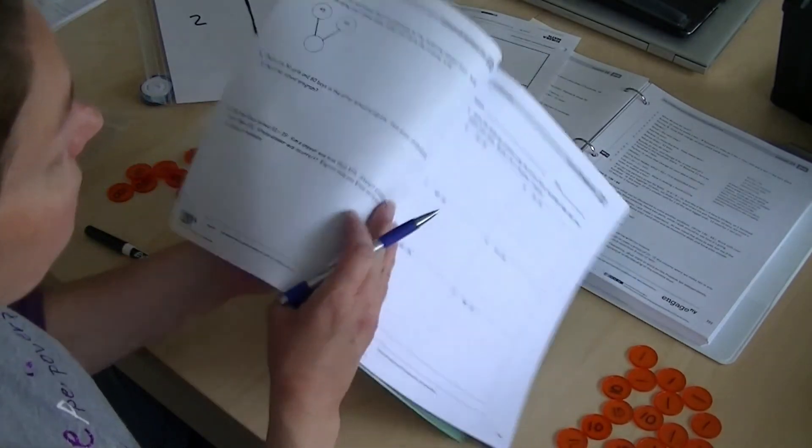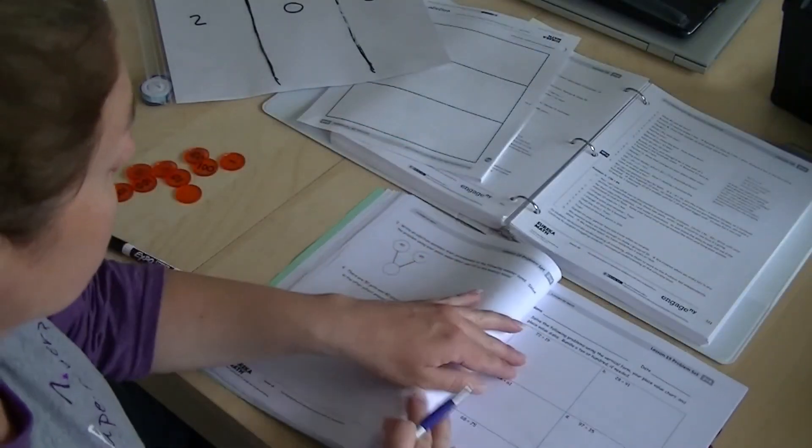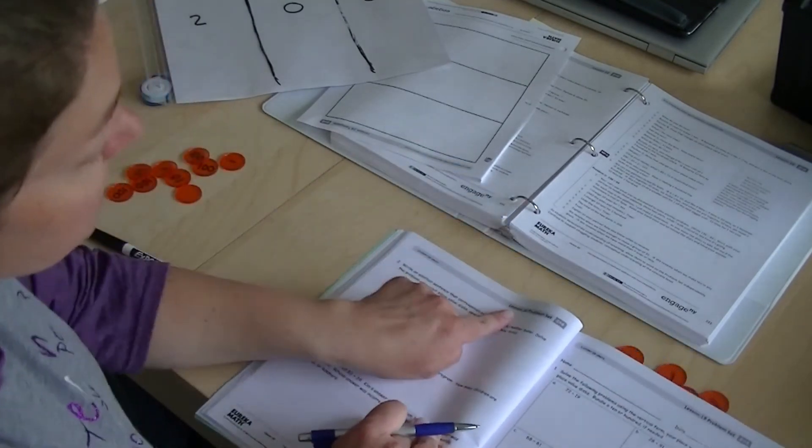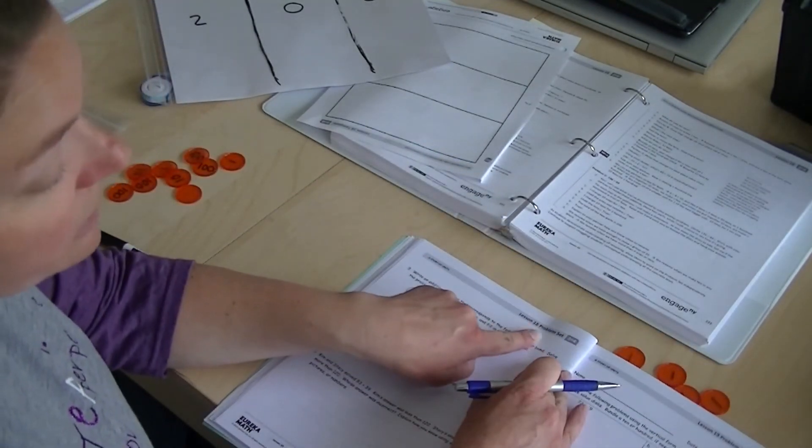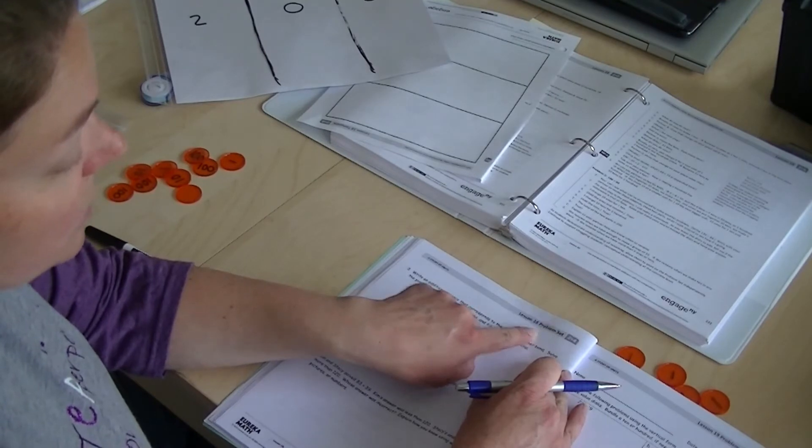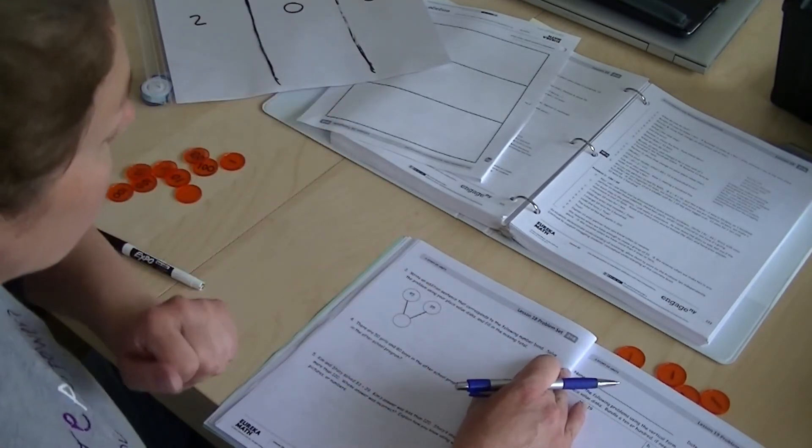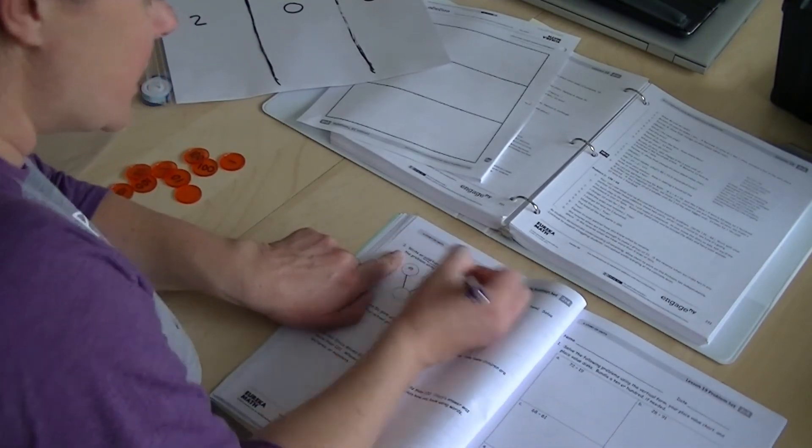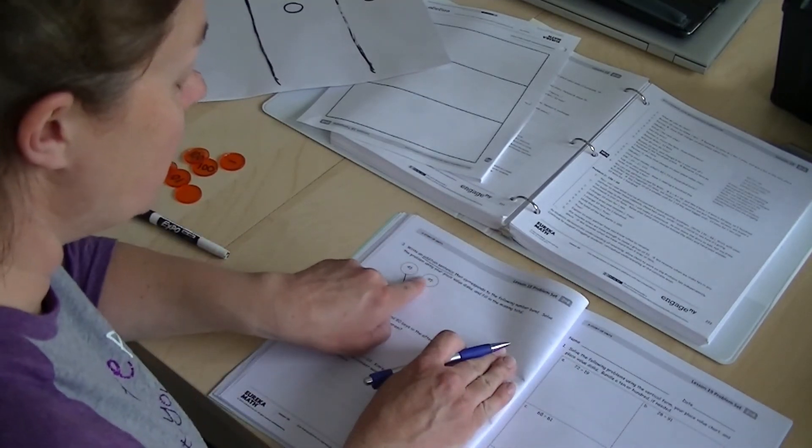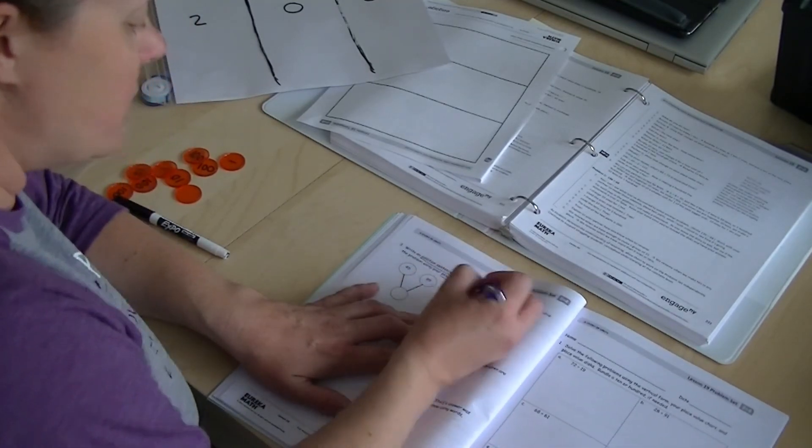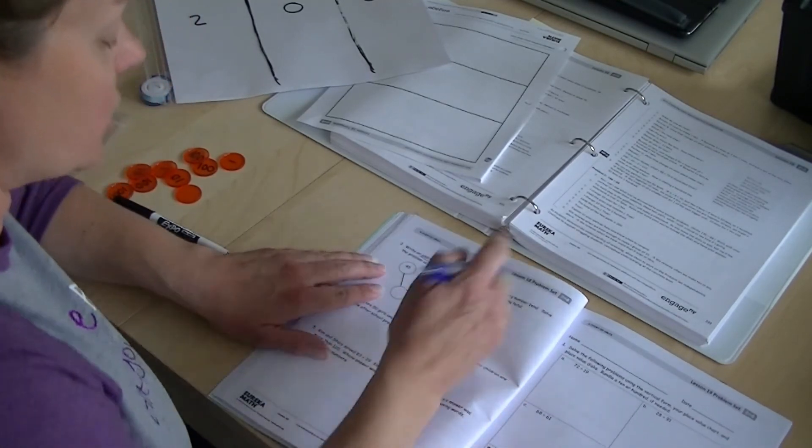Children, you also have the next page. This is still Lesson 18 problem set. Okay? So please try this as well. If you haven't done it yet, that's okay. You can do it now. Write an addition sentence that corresponds to the following number bond. Solve the problem using place value disks and fill in the missing total.